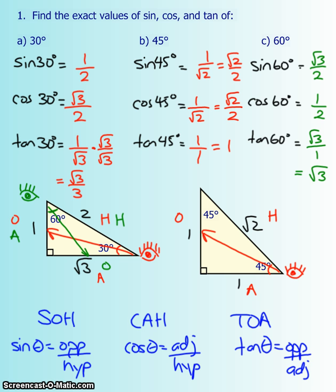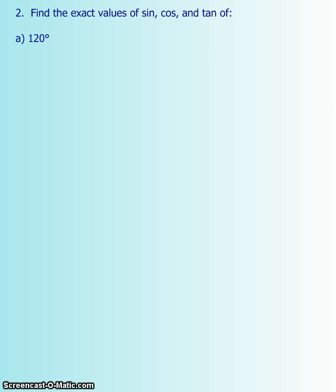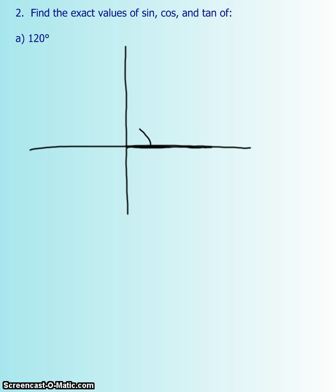What if they give you a larger angle, like 120 degrees? First, draw 120 degrees on the Cartesian plane in standard position, starting along the x-axis and opening 120 degrees — past the 90-degree mark, landing in quadrant 2. Then draw a vertical line from the terminal arm down to the x-axis to create your special triangle.